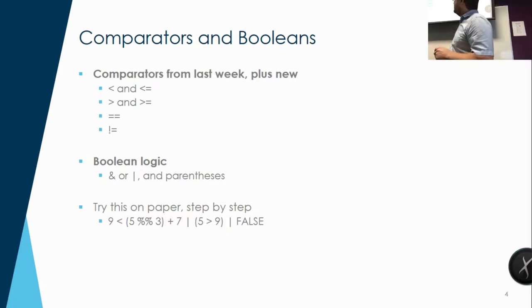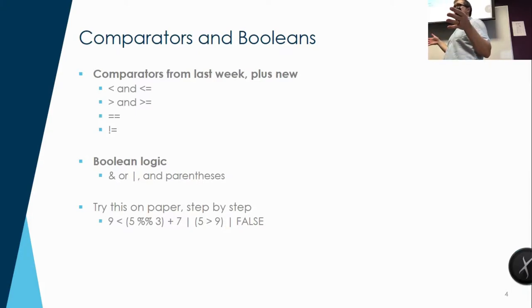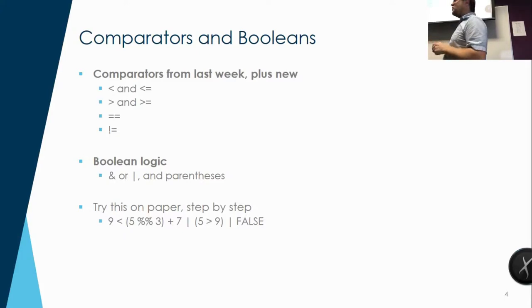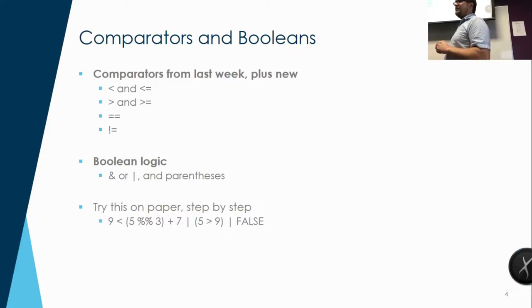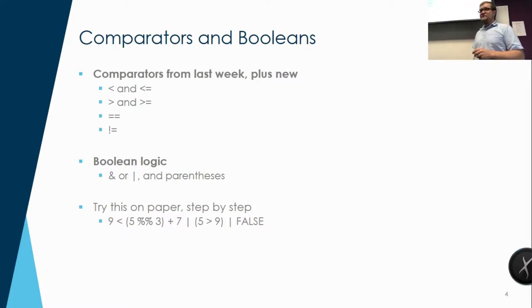Now we have nine less than three in parentheses plus seven. In order of operations, AND and OR are always last — they occur after everything else. So if we do five modulus three, we end up with two plus seven, which is nine. That means this ends up being nine less than nine, which is false. Is five greater than nine? No, that's false too. So we have false OR false OR false, which equals false.